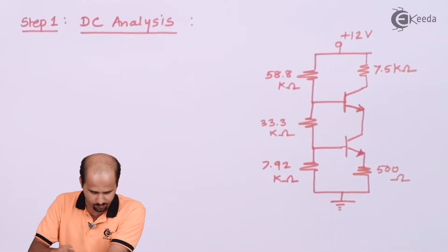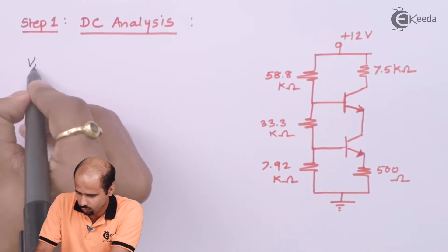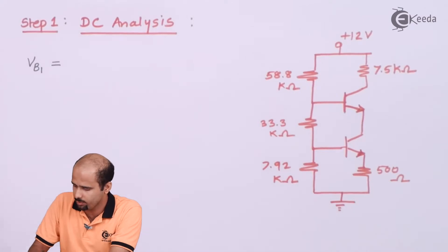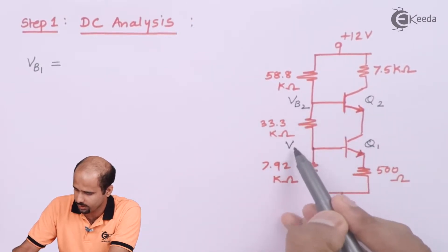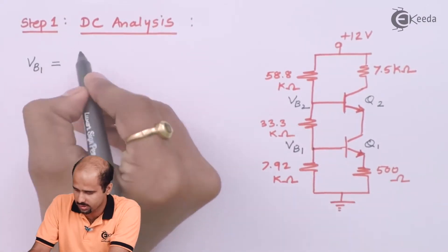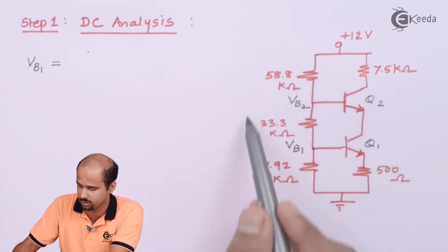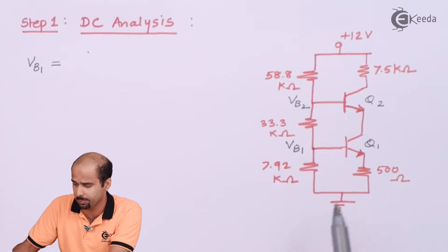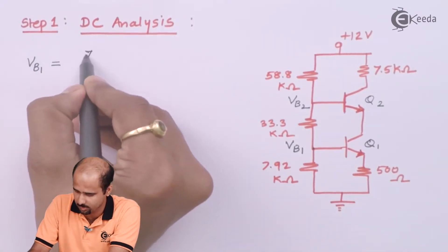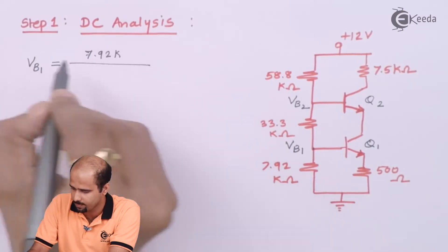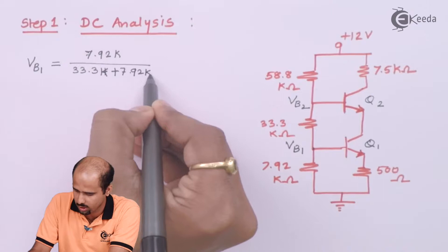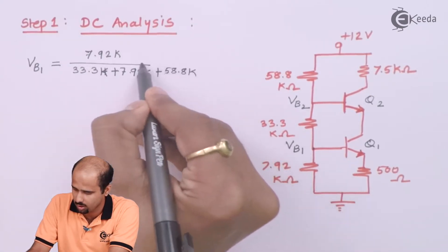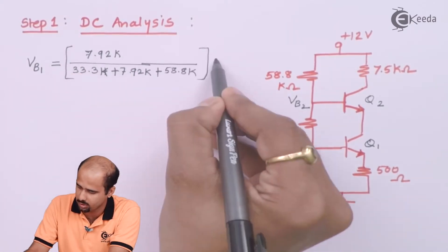For DC analysis, we first find VB1 and VB2. VB1 is found using the voltage divider: VB1 = (7.92k) / (33.3k + 7.92k + 58.8k) × 12 V. VB2 = (33.3k + 7.92k) / (33.3k + 7.92k + 58.8k) × 12 V. The kilo terms cancel in numerator and denominator.